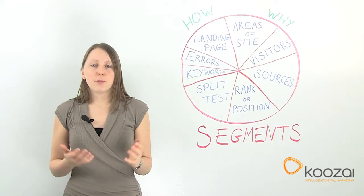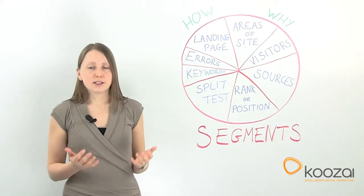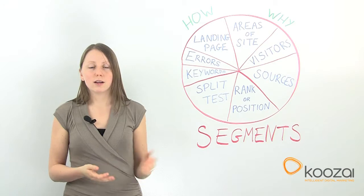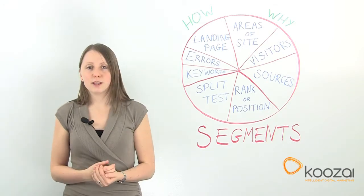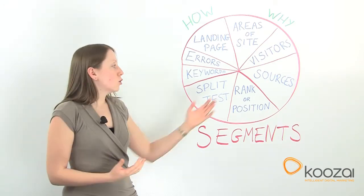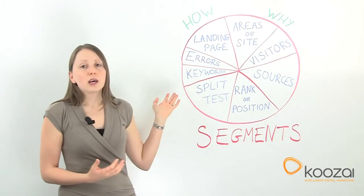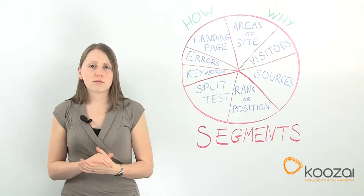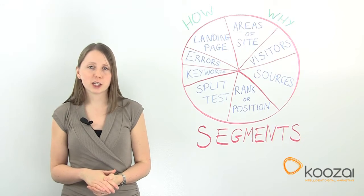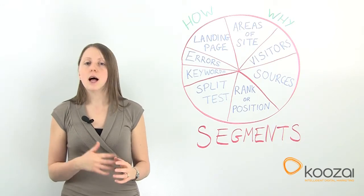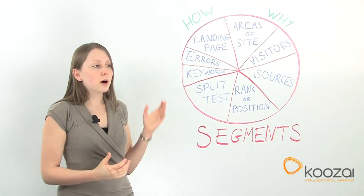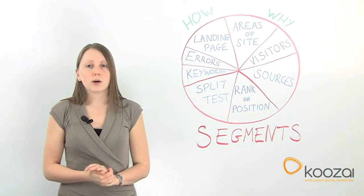At the end of the day, making money is one of the biggest reasons for looking at this data and making sure you optimise it effectively. Within sources, we've got keywords — that's a pretty major part of any SEO or PPC project, focusing on your target keywords and understanding how they perform. You might want to group your keywords; for organic or PPC, you could look at non-brand versus brand.